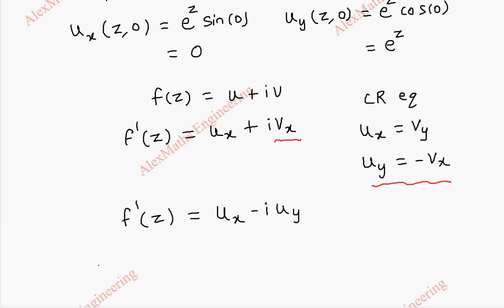From the Milne-Thomson method, f(z) is the integral of u_x(z,0) dz minus i times the integral of u_y(z,0) dz.